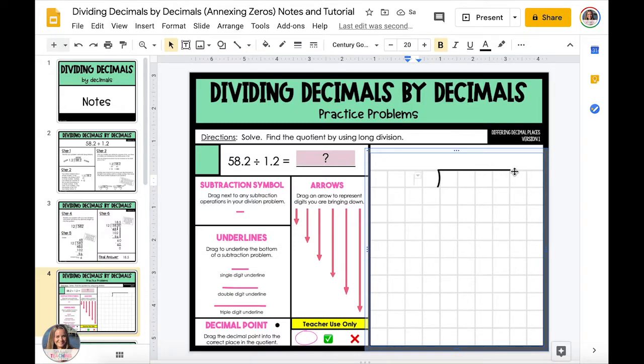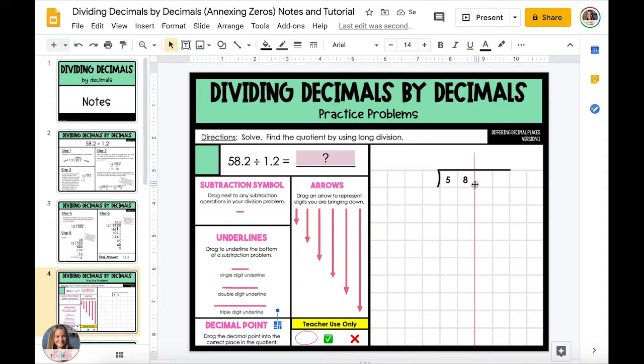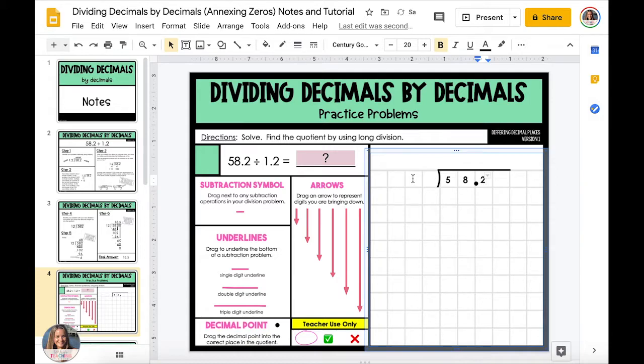Now we're gonna look at a decimal division problem where your answer is not going to be a whole number. So we're gonna start with 58 and 2 tenths and divide that by 1 and 2 tenths.